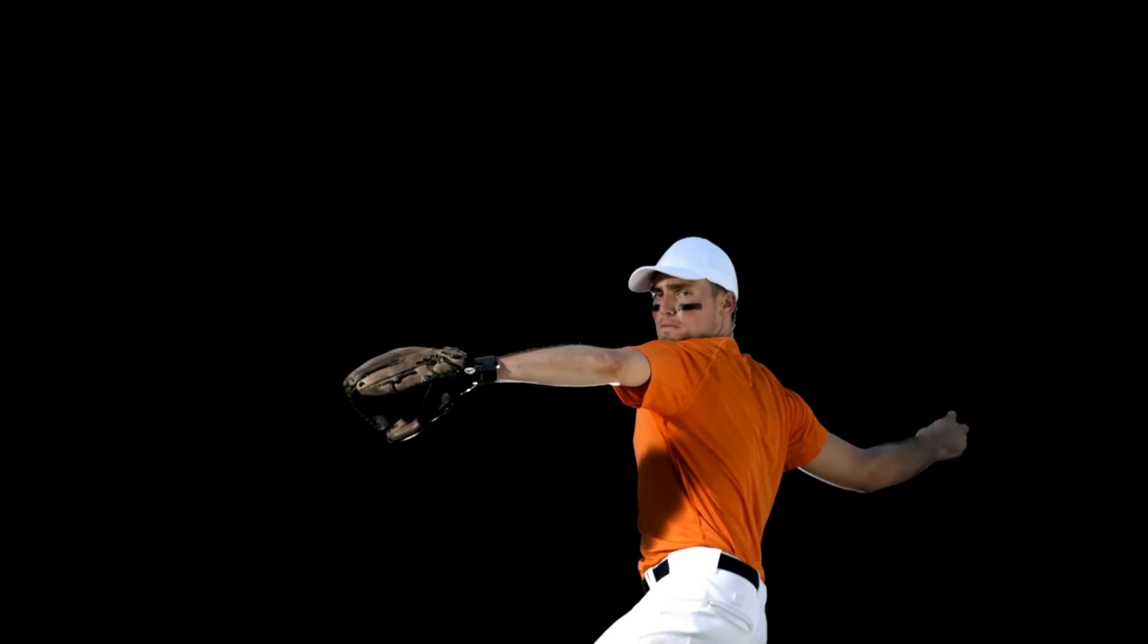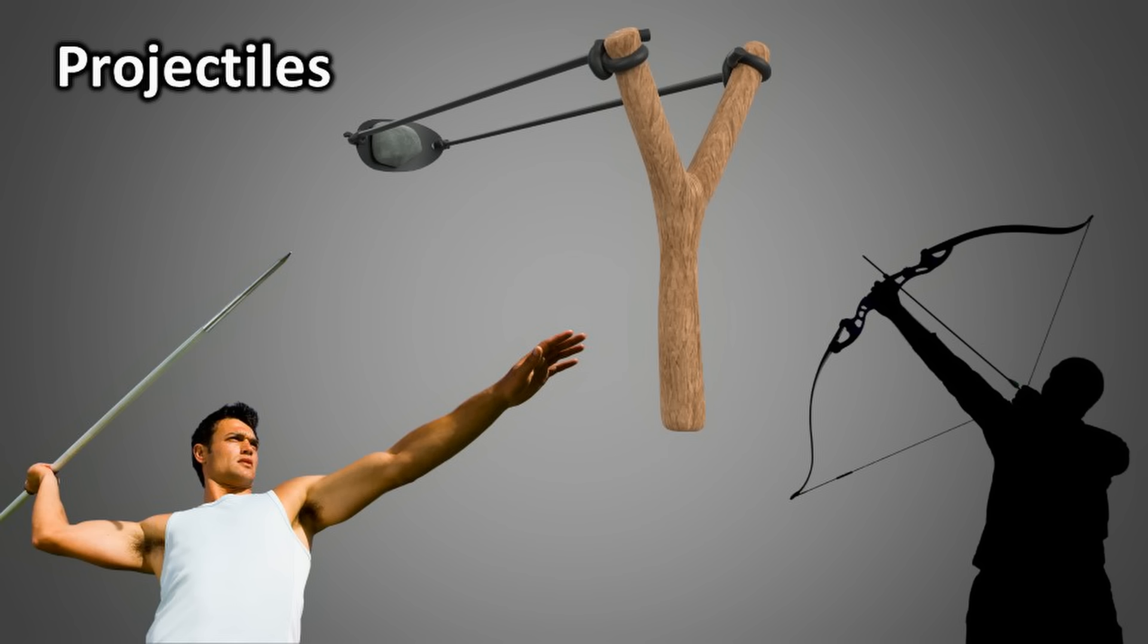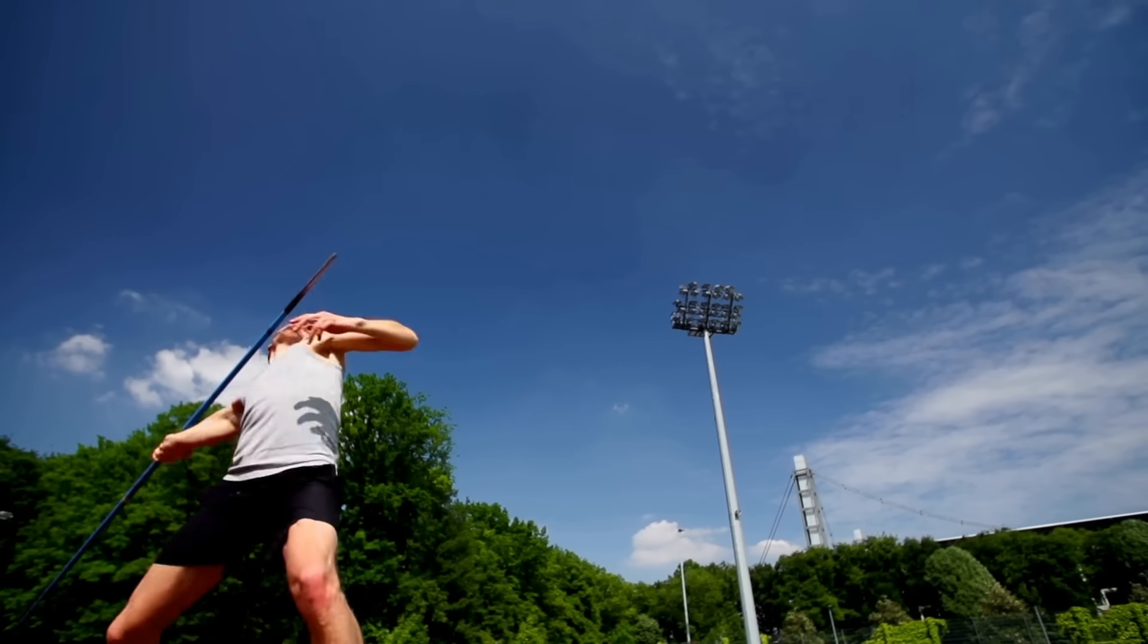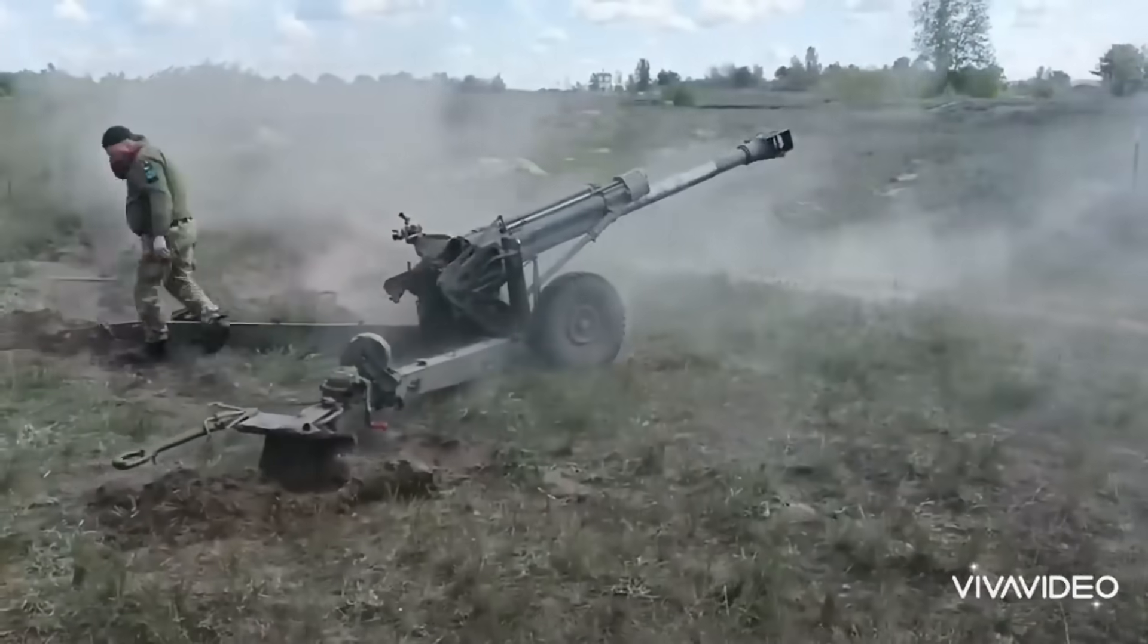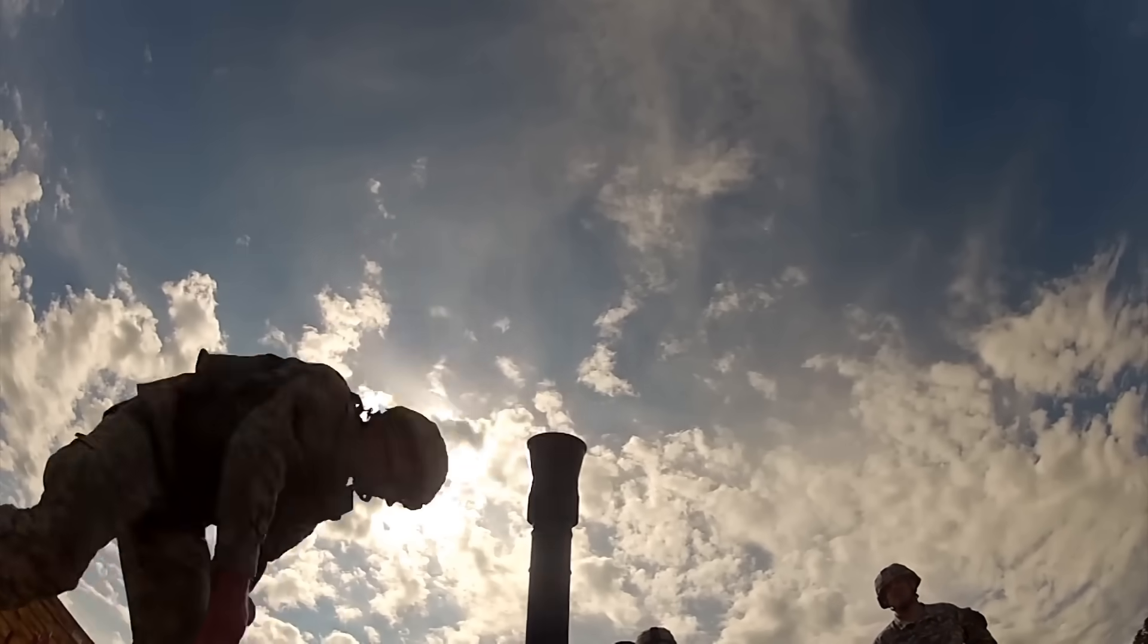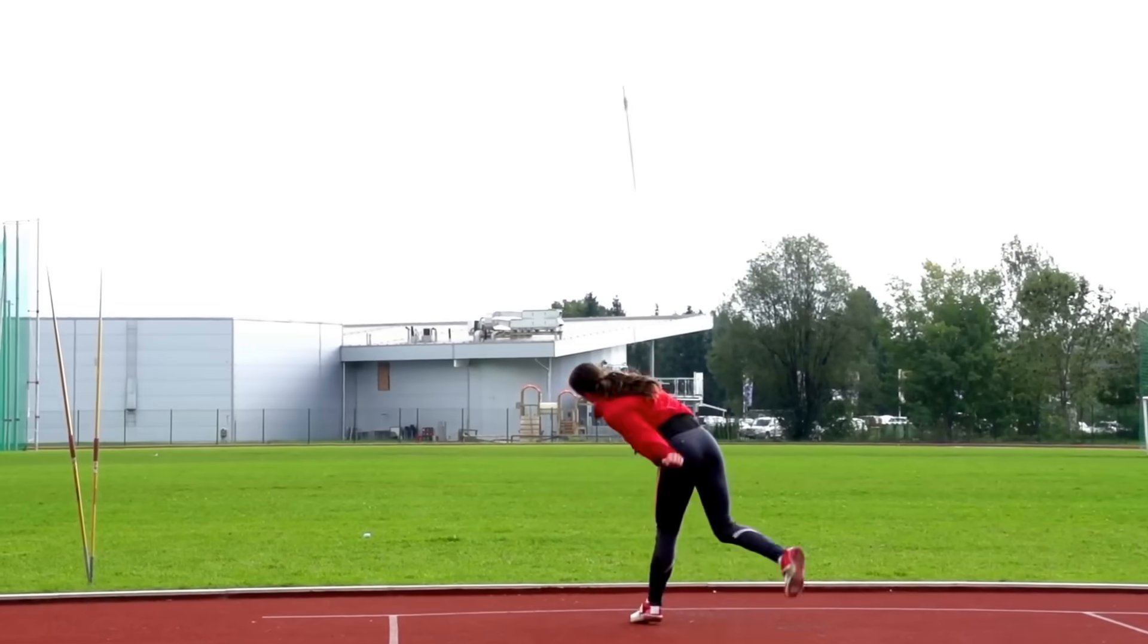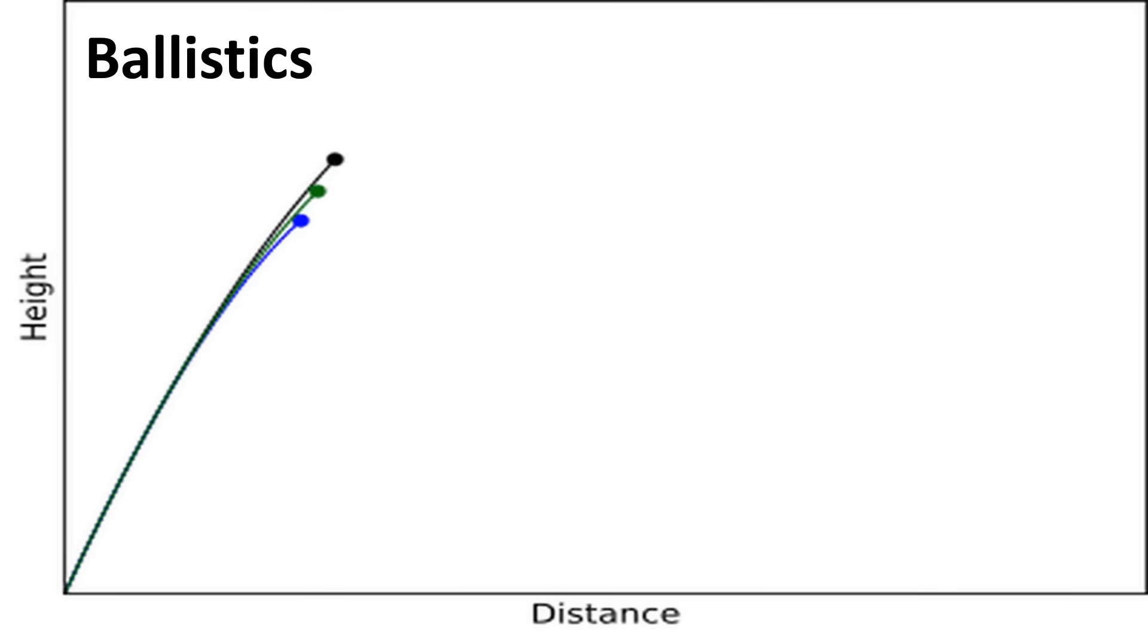Projectiles are objects that travel a long distance after receiving an initial push or thrust. They do not require any continuous force acting on them. For example, when we throw a ball or a javelin, they become projectiles. Similarly, a bullet fired from a gun or a shell launched from a cannon are also projectiles because they rely on an initial force to travel and do not have continuous propulsion. There are only two forces acting on these projectiles during their journey: the Earth's gravity and the resistance from the atmosphere. The term ballistics refers to the study of the path or trajectory of such objects.